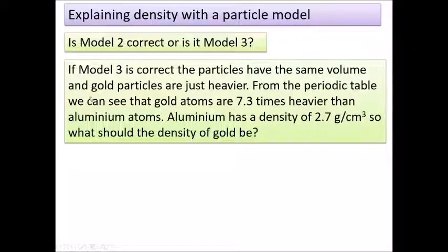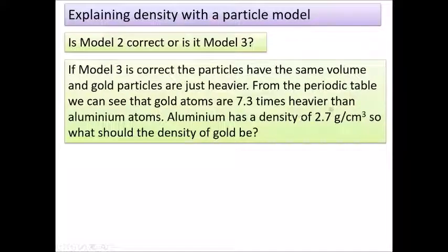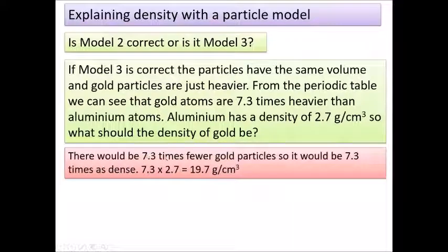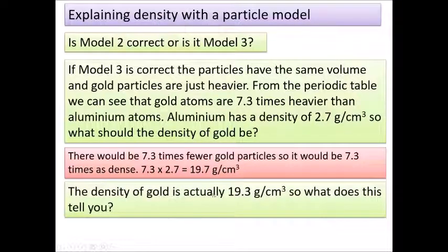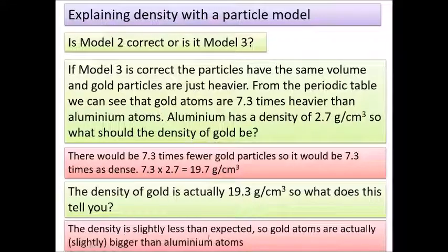There's still a question: do the atoms have the same volume, or are the volumes different too? Gold atoms are 7.3 times heavier than aluminium atoms. If they were exactly the same volume, aluminium's density of 2.7 g/cm³ multiplied by 7.3 would predict a gold density of 19.7 g/cm³. The actual density is 19.3 g/cm³, which is very close — meaning gold atoms are only very slightly bigger than aluminium atoms.